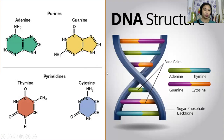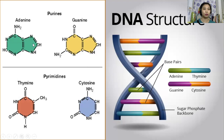The next picture shows that there are four different kinds of bases in DNA. We have thymine, adenine, cytosine, and guanine. These are categorized into purines and pyrimidines, distinguished by the number of rings they are made up of. The purines are made up of two rings and the pyrimidines are made up of one ring.